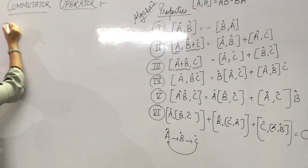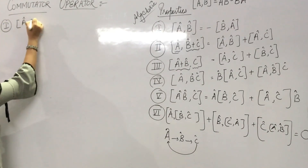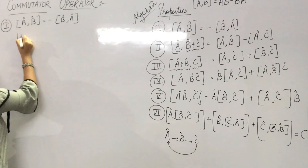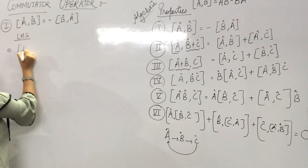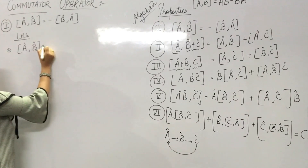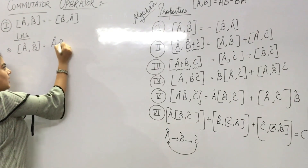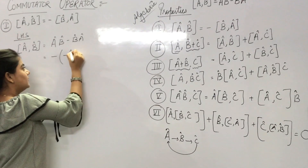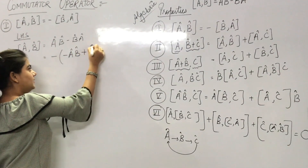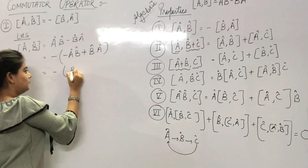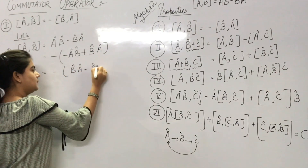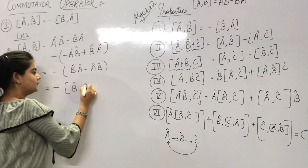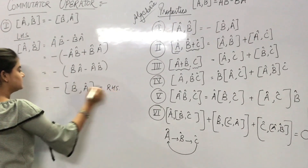Now let's prove all these properties. Starting with Property 1: [A, B] = −[B, A]. Starting from LHS, we know [A, B] = AB − BA. Taking minus common: −(−AB + BA) = −(BA − AB) = −[B, A], which equals RHS. Hence proved: [A, B] = −[B, A].